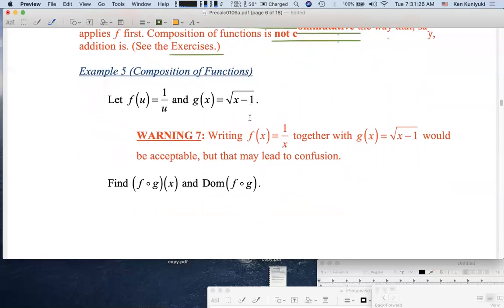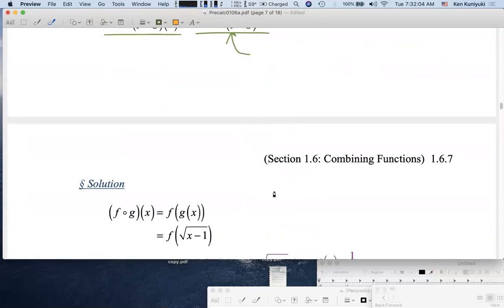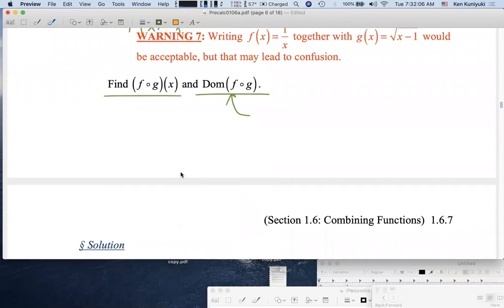Here's an example of composition. Let f(u) equal 1 over u, and this does turn out to be easier when you have u as your independent variable here; it's less confusing, although in principle you could have f(x) equals 1 over x. There's nothing wrong with that except that it can end up being confusing. In any case, f here is the reciprocal function on the implied domain. g(x) equals root x minus 1. Find (f ∘ g)(x) and the domain, bearing in mind though I won't be pushing you on that too hard.